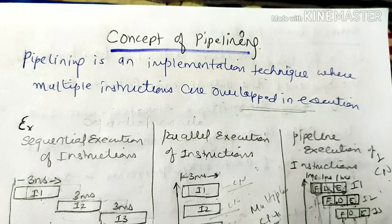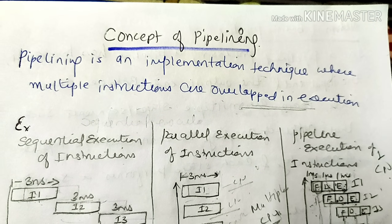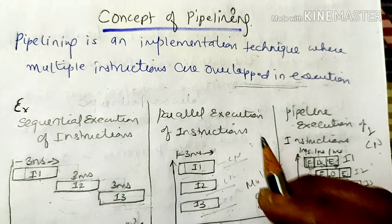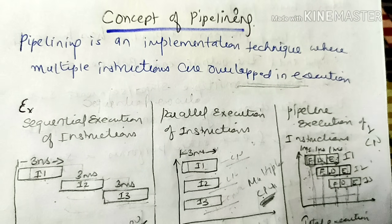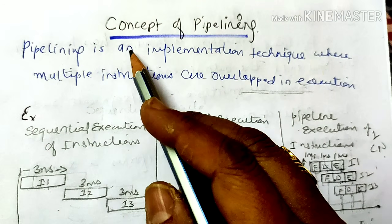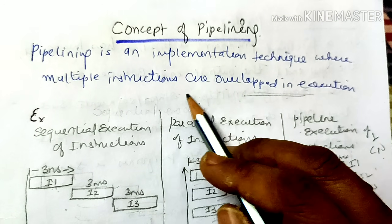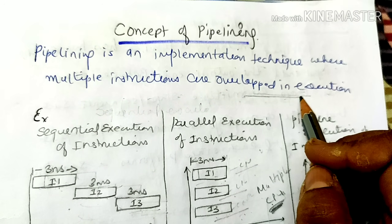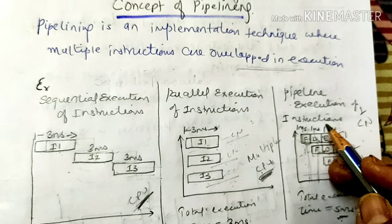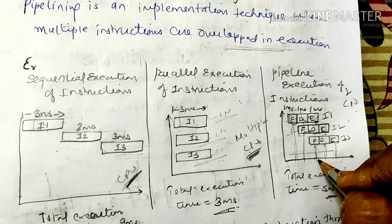In the previous video, we have seen how pipelining is used in real life. Pipelining is an implementation technique where multiple instructions are overlapped in execution — multiple instructions are overlapped in an overlapping way.